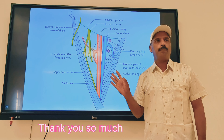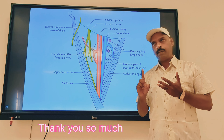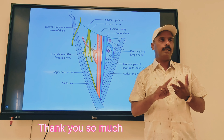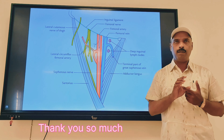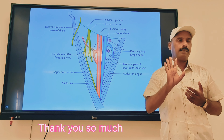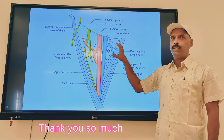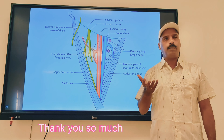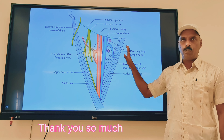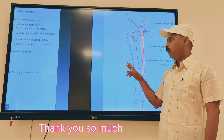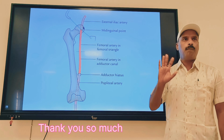Today's topic was the femoral artery and femoral vein. A detailed study was covered including the introduction, origin of the artery, course and extent, relations of the femoral artery in the femoral triangle and adductor canal, branches, and lastly clinical anatomy. The femoral vein was discussed briefly, as it is not commonly asked, but you should remember it. The femoral artery is commonly asked for short notes and long questions. You should be able to write and draw the diagram representing the femoral artery.